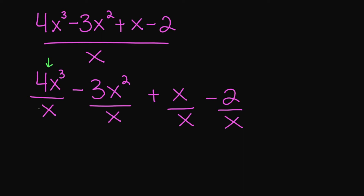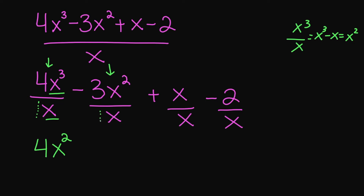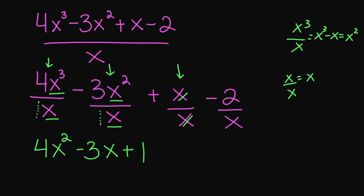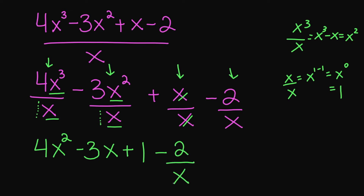4x cubed divided by x: 4 divided by our imaginary one gives us 4, and x cubed divided by x gives us x squared. For negative 3x squared divided by x: negative 3 divided by 1 gives us negative 3, and x squared divided by x gives us a positive 1 — your x's cancel out, or equivalently x to the 1 minus 1 is x to the 0 which equals 1. Then negative 2 over x cannot be simplified, so it stays as negative 2 over x. That is your final answer.